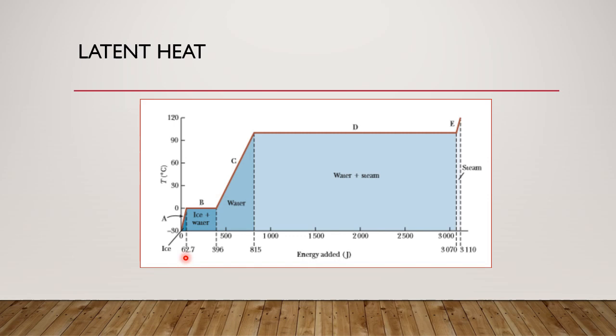We have ice. At this point, when we add heat, suppose we added 62.7 of energy, the temperature becomes 0. When you add heat, it became 0 in temperature. The change is linear until it reaches 0. What does 0 mean? That's where the melting point of ice is.